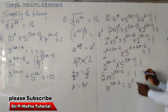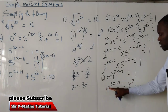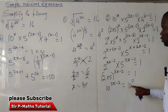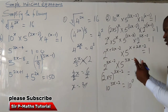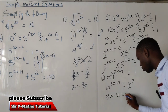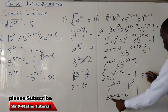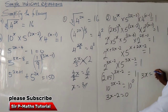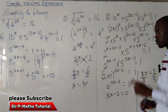We write this as 10 raised to the power of 3x minus 2, equal to 1. Since any number raised to the power of 0 is 1, I write 1 as 10 raised to power 0. The bases are now equal, so we equate the powers: 3x minus 2 equals 0. Making x the subject: 3x equals 2, and dividing both sides by 3 gives x equals 2 over 3.